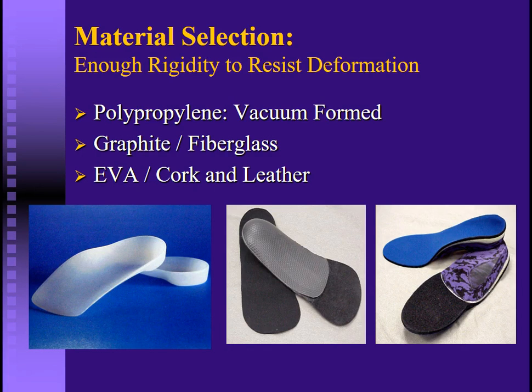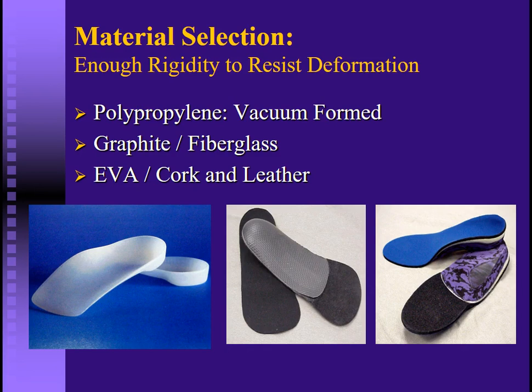Material is not critical as to a particular material being better than others — it just has to be rigid enough to resist deformation. You can use vacuum-form polypropylene, direct-milled polypropylene, graphite, fiberglass, or even EVA and cork and leather devices, as long as they're rigid enough. If they're too soft, the device will compress under the foot and will not be able to apply adequate force to support the foot.